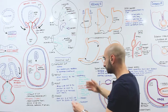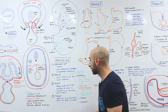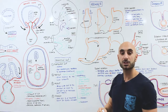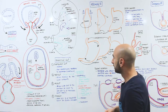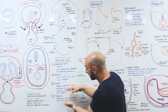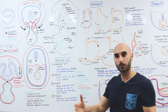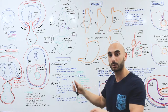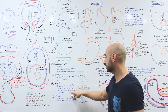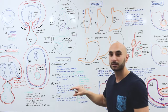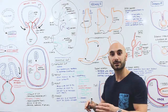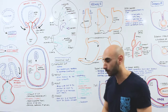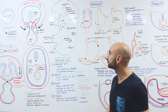The foregut goes from below the pharynx — from the respiratory diverticulum to the liver outgrowth — for the purposes of this video. In next videos we'll talk about the midgut and hindgut. Just for revision: the midgut goes from the end of the foregut, the proximal duodenum, all the way to the junction of the right two-thirds of the transverse colon to the left one-third. And then the hindgut goes all the way from there to the cloacal membrane.